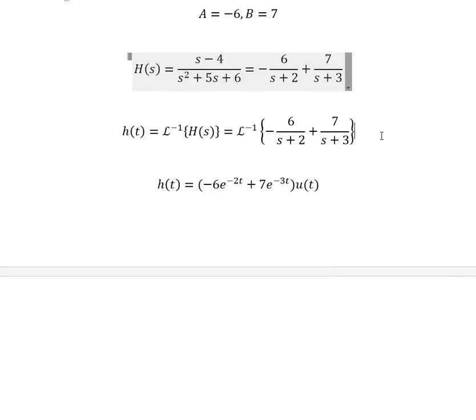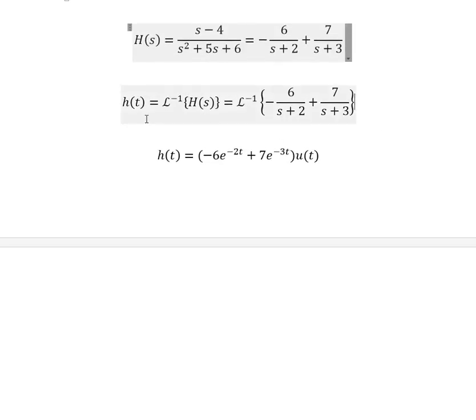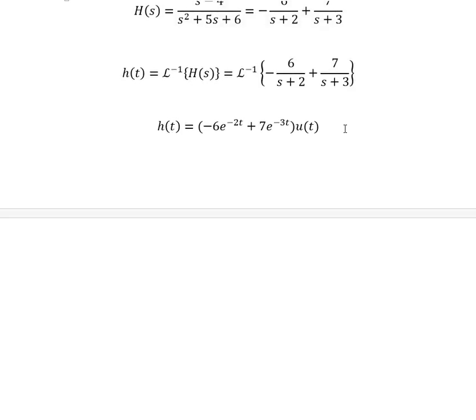So my h(t) equals my inverse Laplace transform of my transfer function, and that's the same as my inverse Laplace transform of my equation that I just got over here. And when I do this, I get that my impulse response equals -6e^(-2t) plus 7e^(-3t).